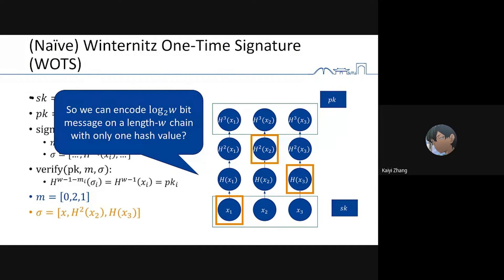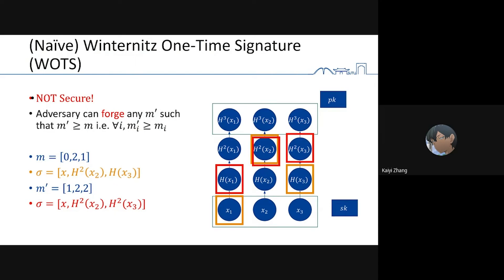Does it mean we can encode log W bit message on a length W chain with only one hash value? No. It is not secure for the naive version one-time signature. Suppose the signer signs a message 0, 2, 1. The adversary can forge m prime 1, 2, 2 by releasing those three right hash values. Actually, the adversary can forge any message m prime such that m prime is greater or equal to m. It means for each coordinate, m prime i is greater or equal to m i.